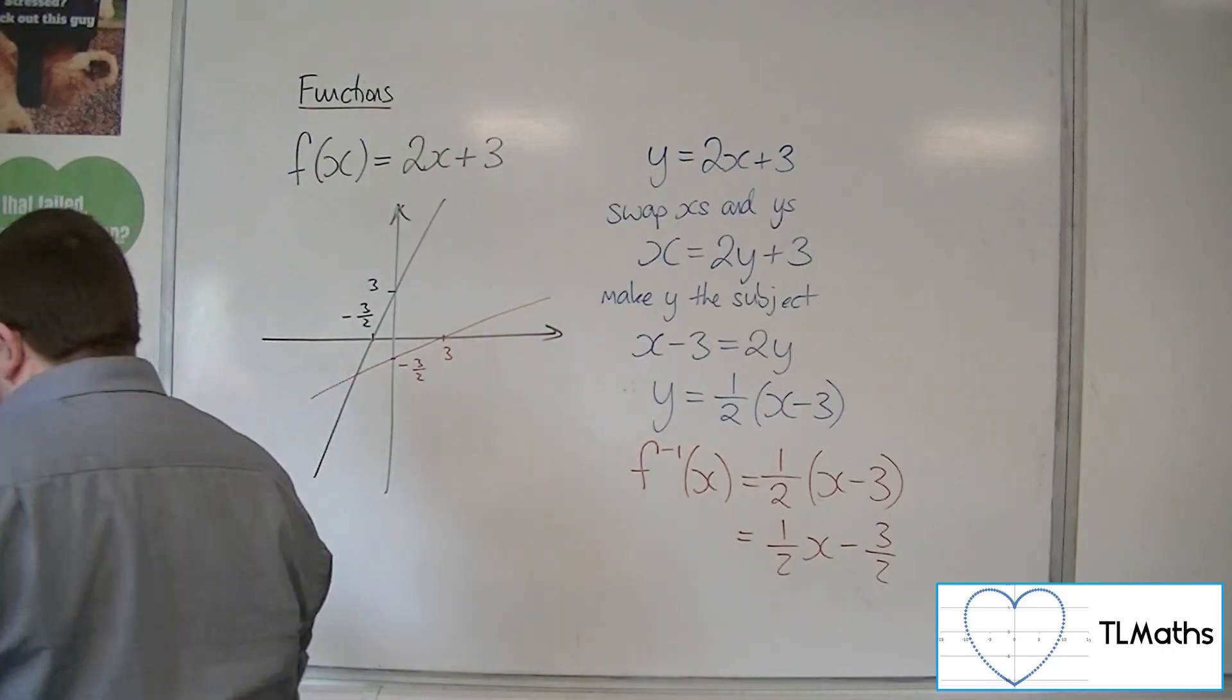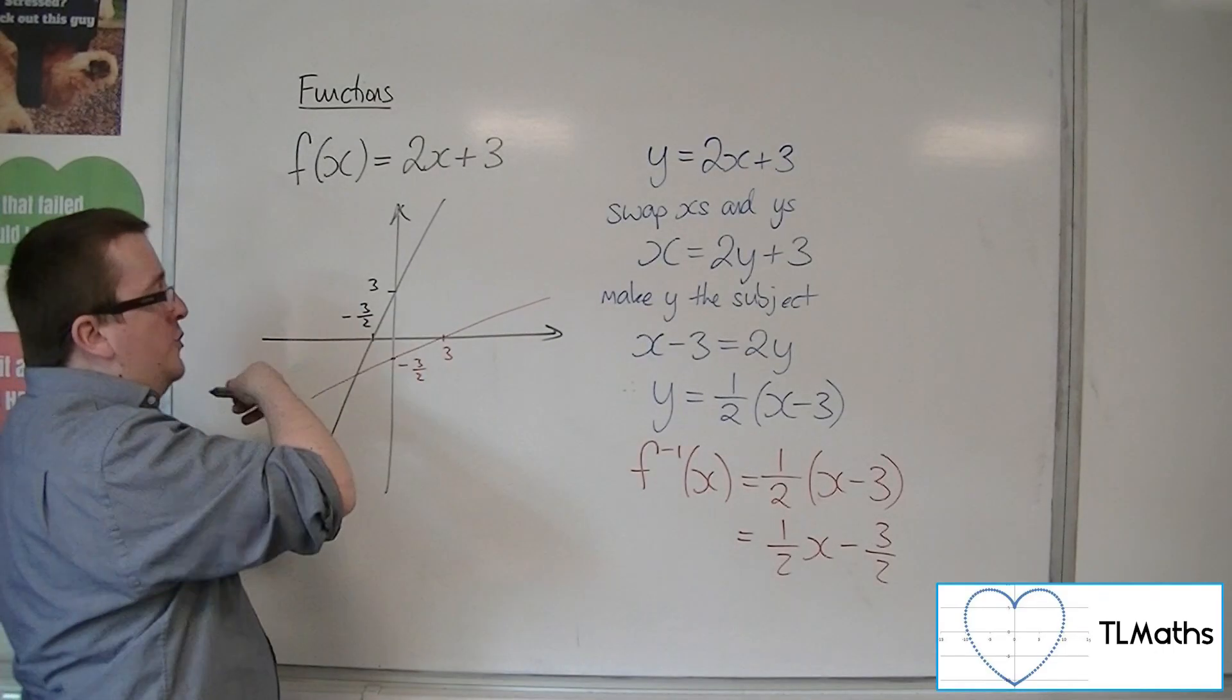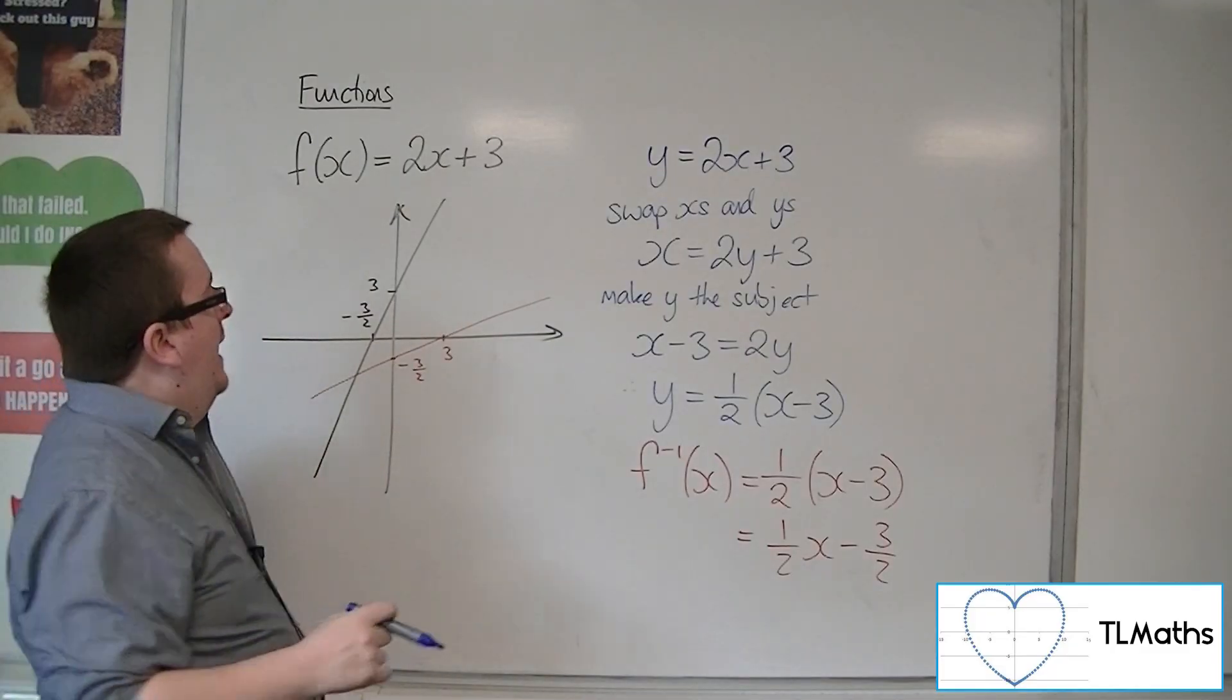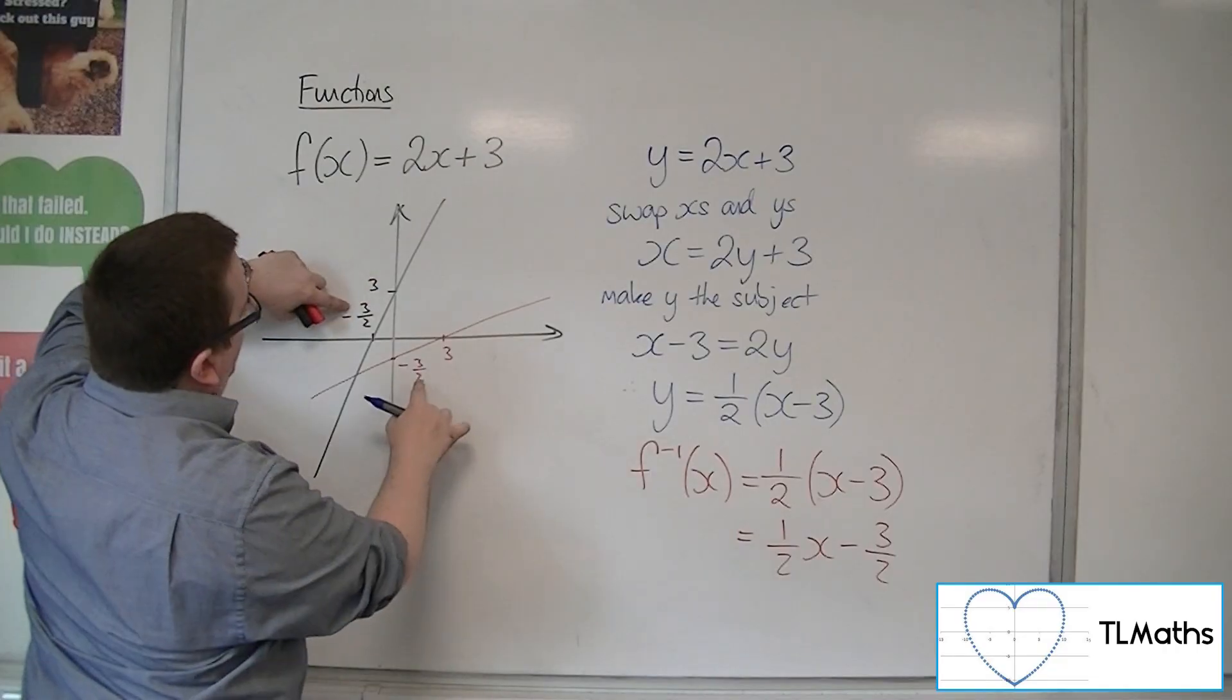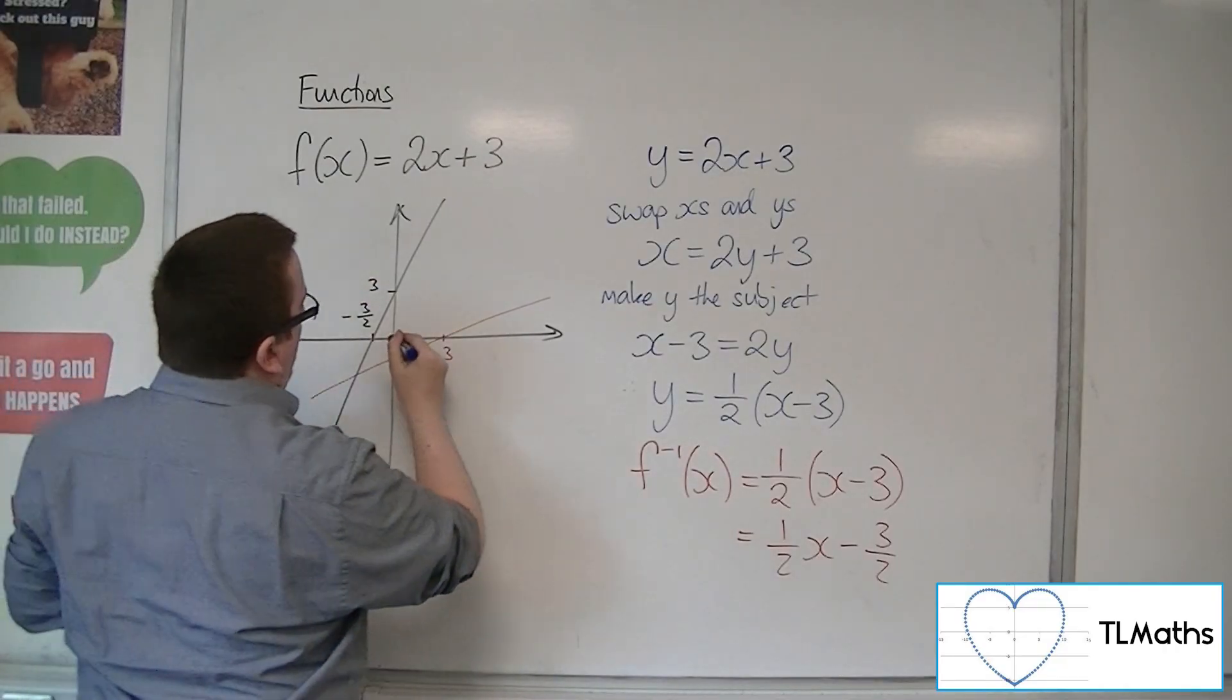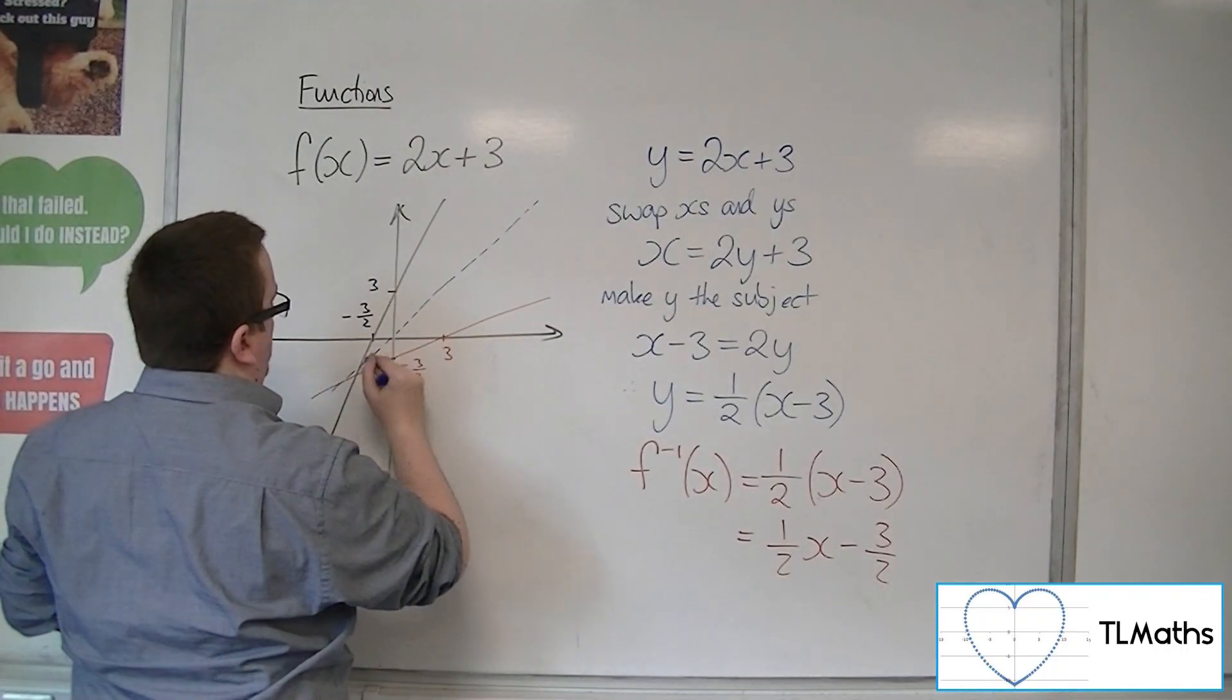So what do we have? Well, we actually have two straight line graphs. And how are they connected? Well, you can see that it's 3, 3, minus 3 halves, minus 3 halves. And actually, oh, I didn't draw that very well.